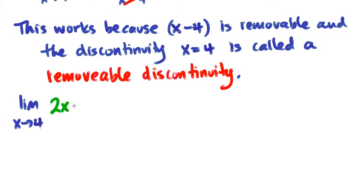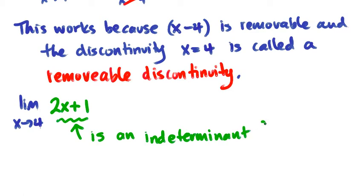And this form where I have this piece, 2x plus 1, this 2x plus 1 is an indeterminate form.